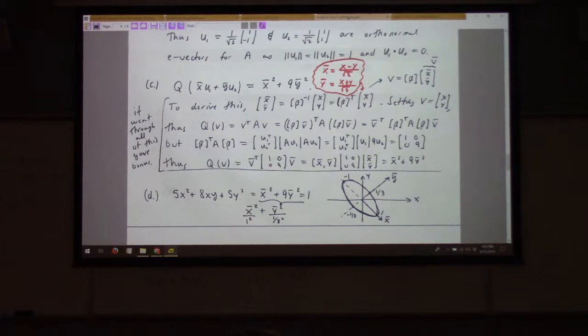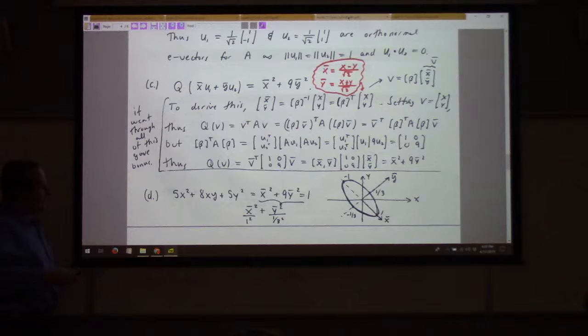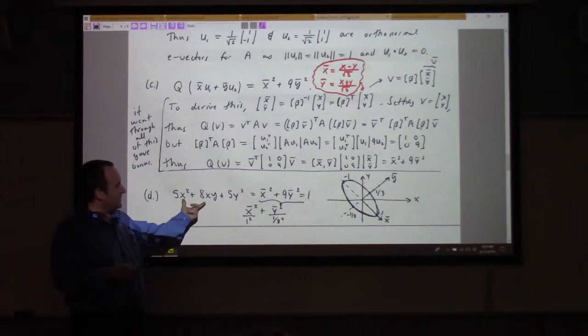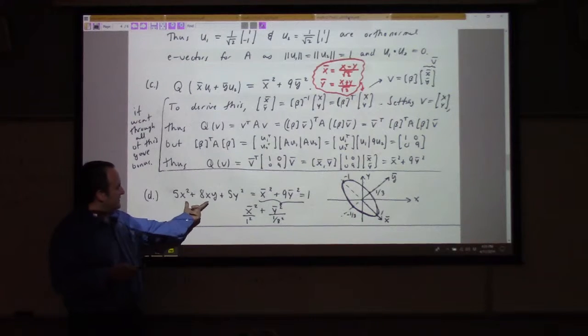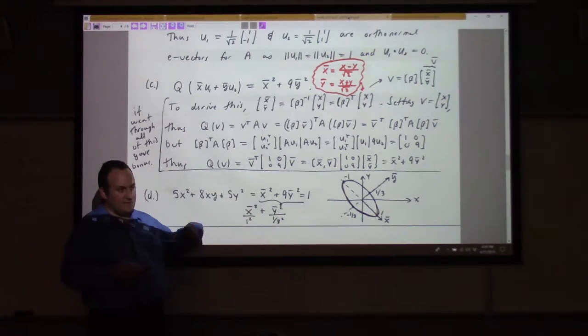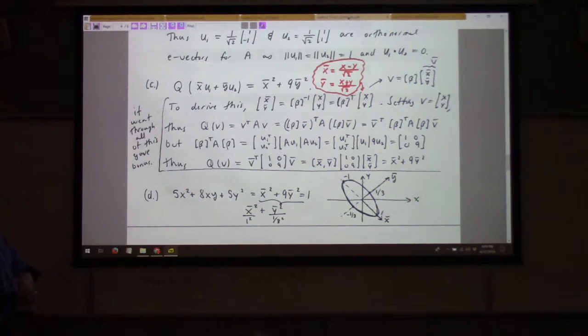But, you know, I just personally think this is so neat that this quadratic form stuff allows us to find the change of variables, which allows us to take and eliminate that cross term and put it as a sum of squares. To me that's so very, very neat.